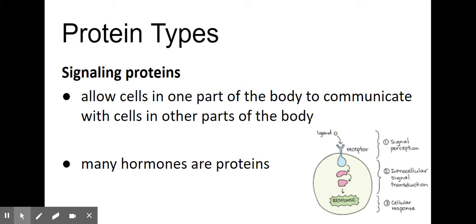Signaling proteins are proteins that communicate with other parts of the body. They signal things like: we need to raise our temperature, lower our temperature, we need to release hormones. They give the body a map of what needs to happen.